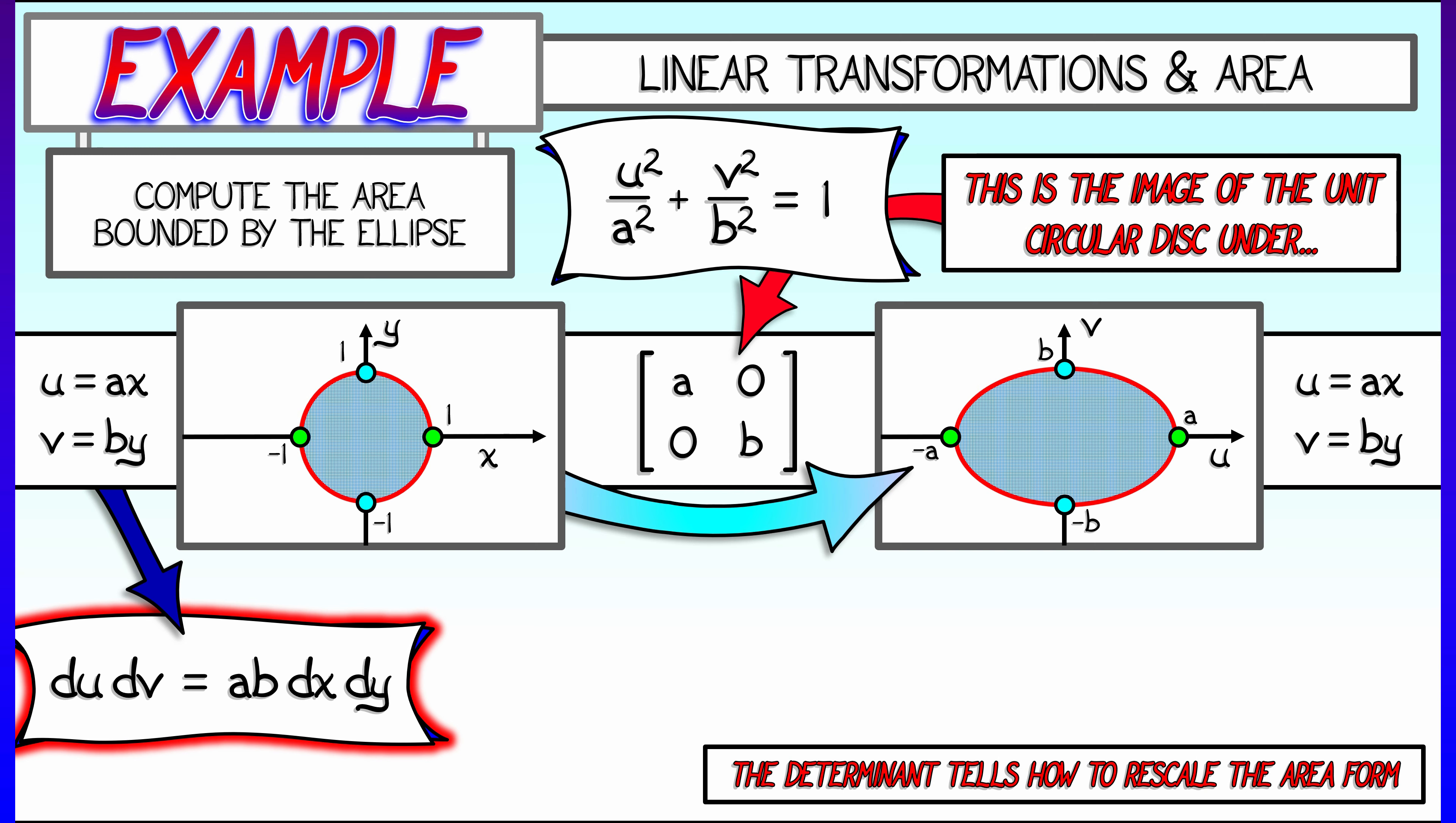The area in the u-v plane, du dv, is really ab, the determinant of this matrix, times dx dy, the area form in the x-y plane.